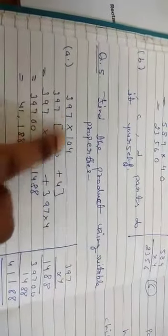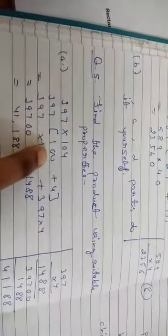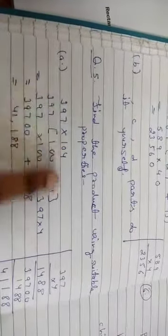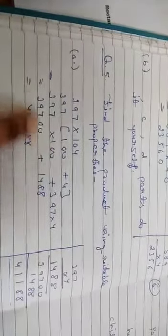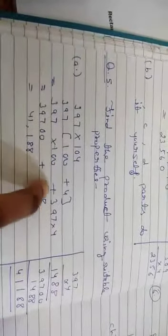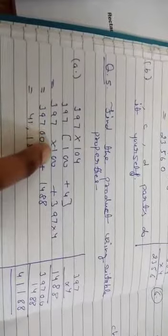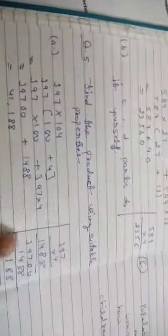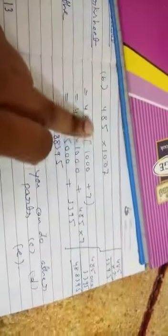Question number fifth is find the product using suitable properties. First is 397 into 104. So we split 104 into 100 plus 4. Then 397 will be multiplied by 100 and 397 multiplied by 4, then we use the plus sign. Then you multiply and add all the different parts.